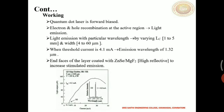The electron and hole recombination causes the emission of laser light. By varying the length, the laser light with a particular wavelength will be emitted. When the quantum dot laser is forward biased, the electrons and holes recombine and there is light emission. The light emission with the particular wavelength is adjusted by varying the length. The end faces of the layer are coated with zinc selenide and magnesium ferrite to increase stimulated emission.